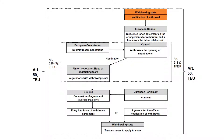Article 50 initially requires that the European Council sets guidelines for transitional arrangements and the future relationship between the country and the EU. These shall then be negotiated in accordance with Article 218 of the Treaty on the Functioning of the EU. This article firstly requires that the Commission submits recommendations to the Council. The Council then needs to authorize the opening of the negotiations by nominating a union negotiator who has defined an agreement with the withdrawing state. This agreement is finally concluded by the Council and the withdrawing state.